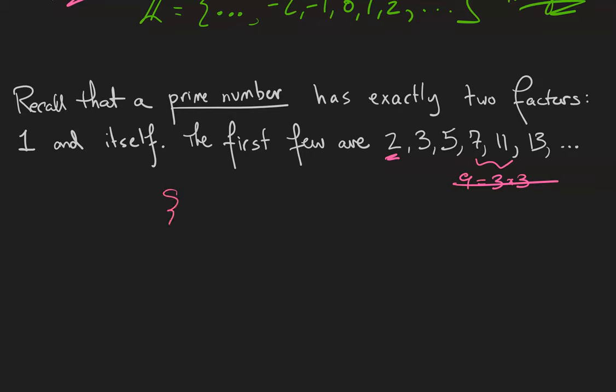When roster notation isn't going to be convenient, we use something called set builder notation. The set of prime numbers can be written as the set of all P such that P is a prime number. So this is called set builder notation.